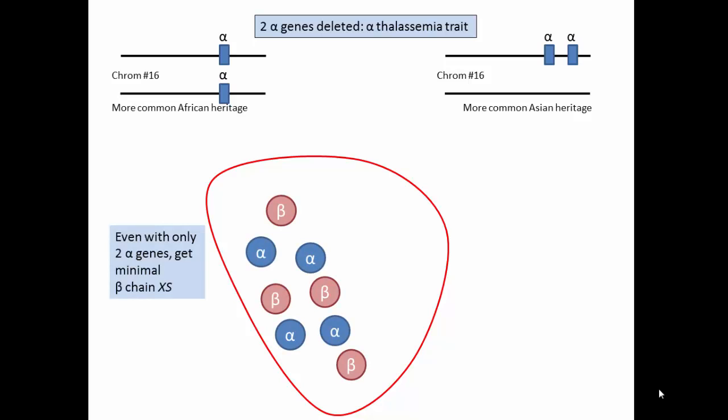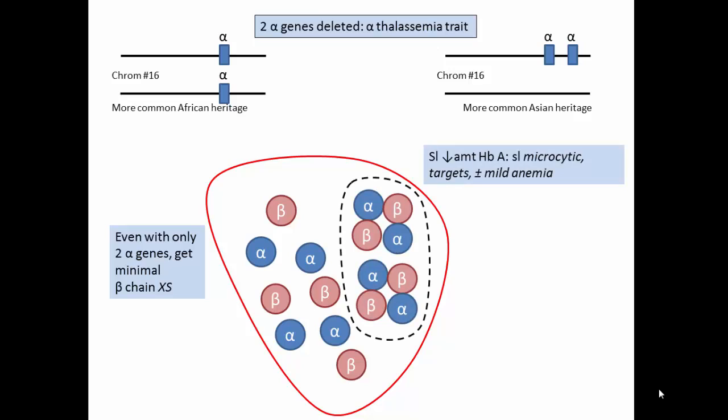But even with only two alpha genes, there is minimal beta chain excess, a slight decrease in the amount of hemoglobin A produced, resulting in individuals with slightly microcytic cells, targets, with mild or no anemia.